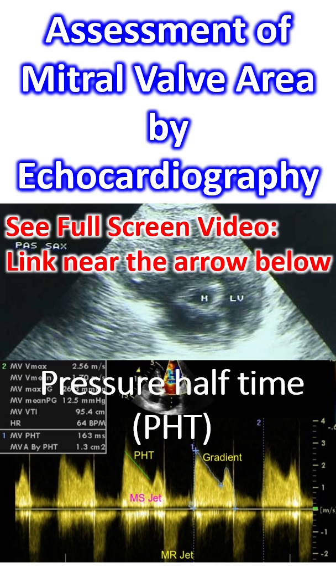In this image, the green cursor measures the pressure half-time of the mitral stenosis jet. In this case, the pressure half-time was 163 ms.